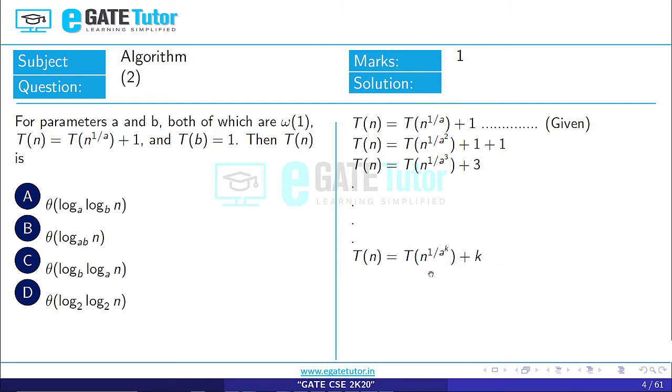We want this to be the base term and we know that T(b) is equal to 1. We equate this value to b. To find k, we equate n^(1/a^k) is equal to b. As we know that T(b) is equal to 1, so b^(a^k) is equal to n.